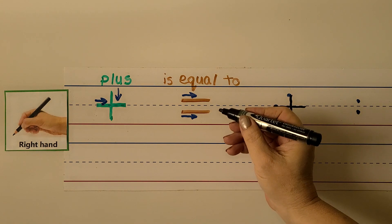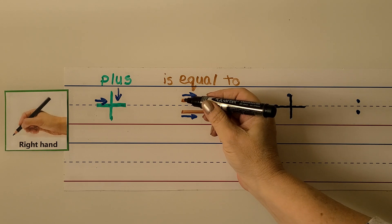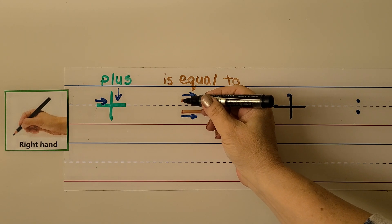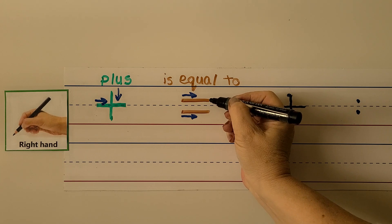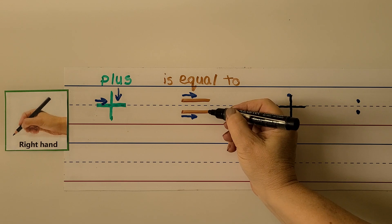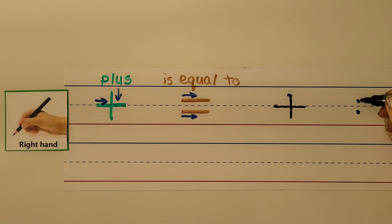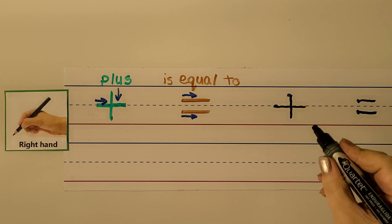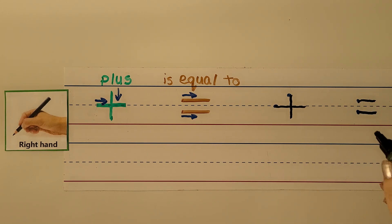We can make the is equal to sign. We start on this side above the dotted line, and we pull the pencil towards us, then go back and put it here and make another one towards our hand. So we start here, pull towards our hand, then start here and pull towards our hand. We made a plus and an is equal to symbol.